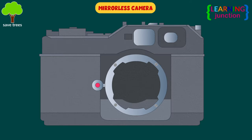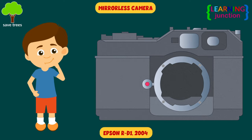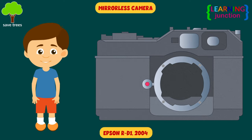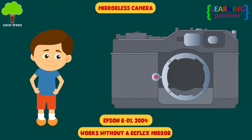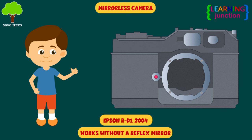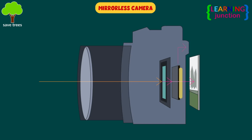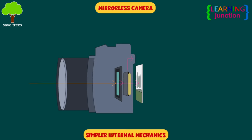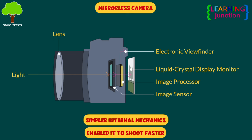Mirrorless camera. In 2004, Epson released the first mirrorless camera, a type of camera that works without a reflex mirror. A mirrorless camera's simpler internal mechanics enable it to shoot faster with more perfection.